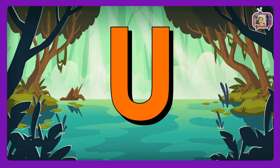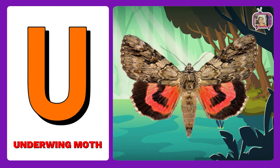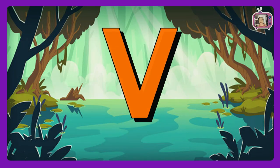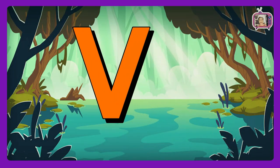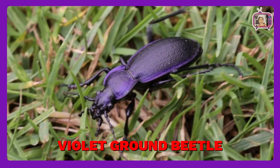U is for Underwing Moth. Underwing Moth. V is for Violet Ground Beetle. Violet Ground Beetle.